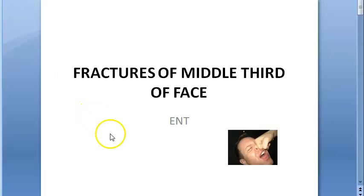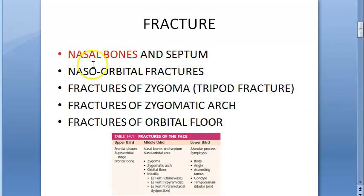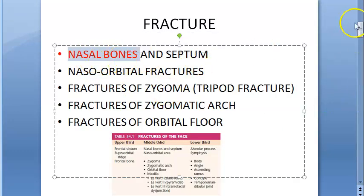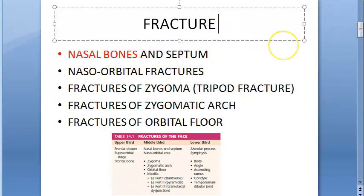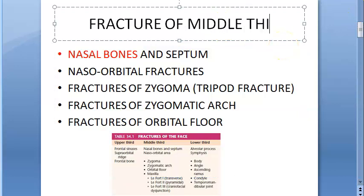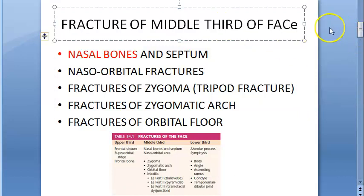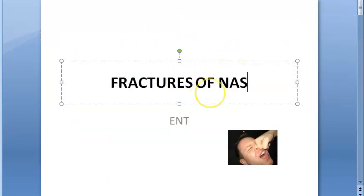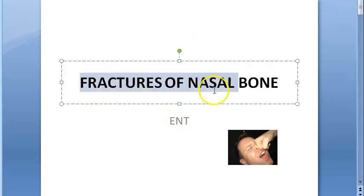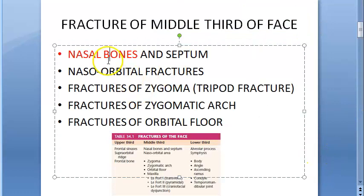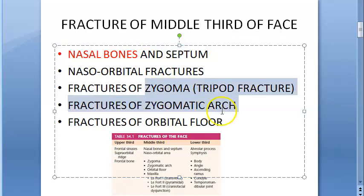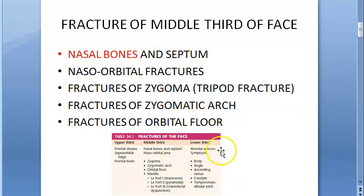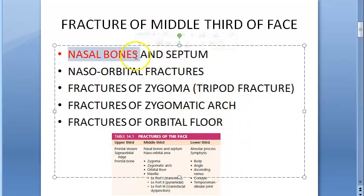In this video, let us look at the fractures of the nasal bone. We are concerned only about the nasal bone here. We are in the fracture of the middle third of the face, specifically focusing on nasal bone fractures. In the middle third of the face, you have the nasal bone, nasal septum, orbit, zygomatic arch, etc. But we will focus on what happens to the nasal bone.